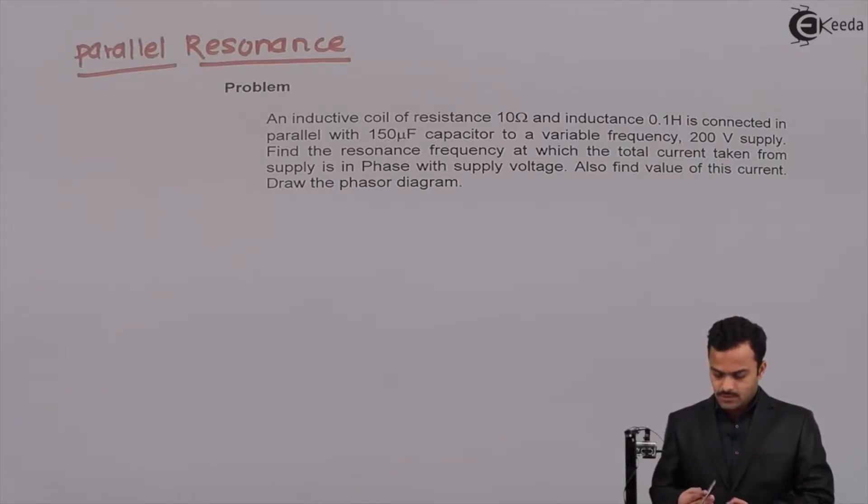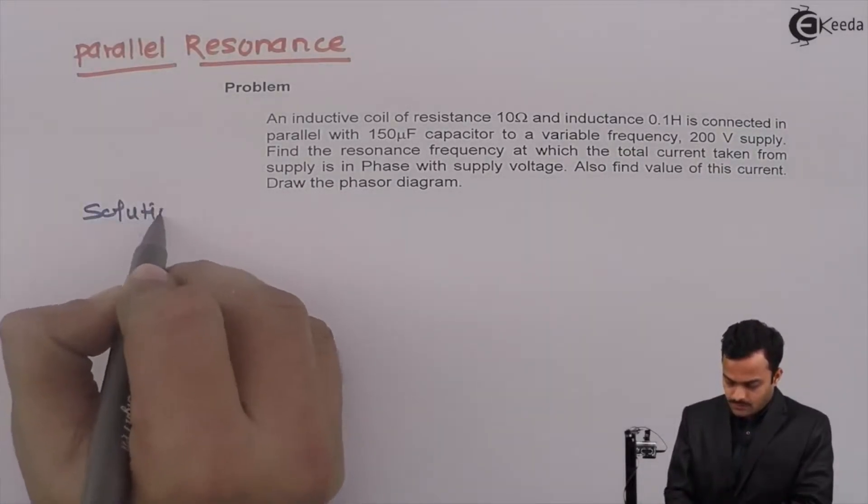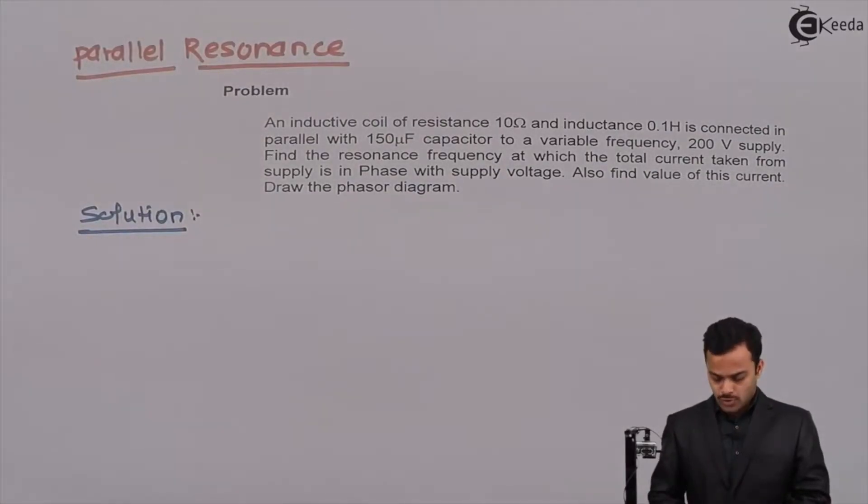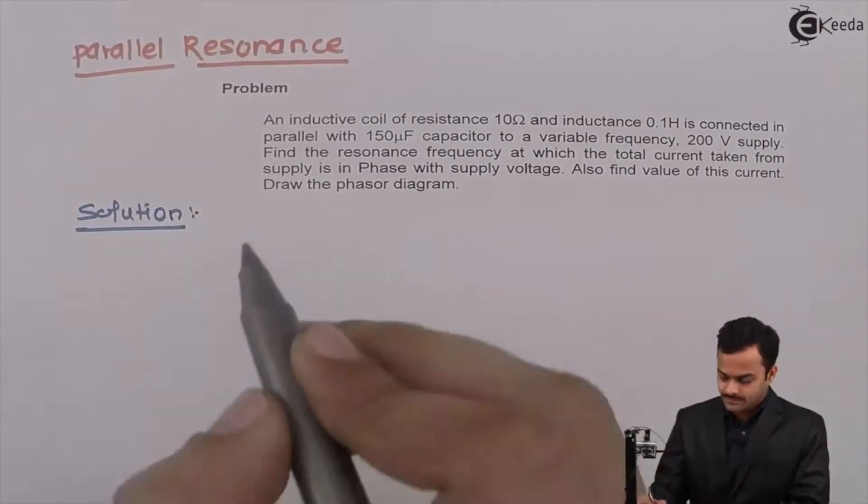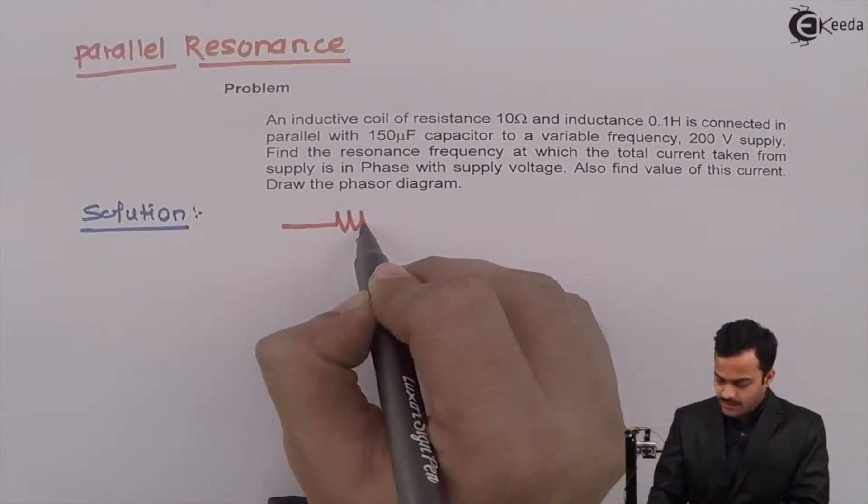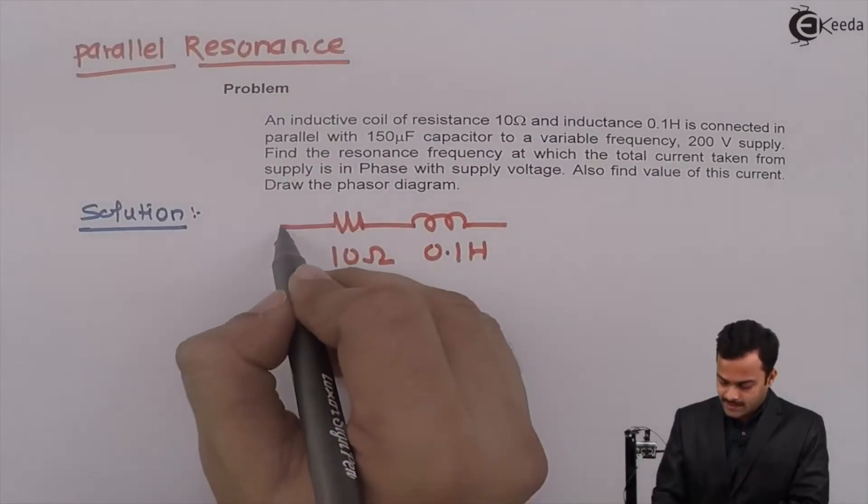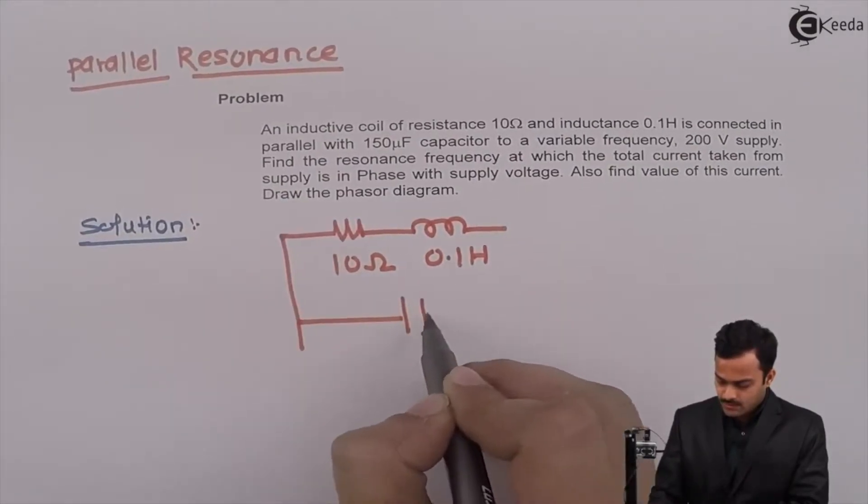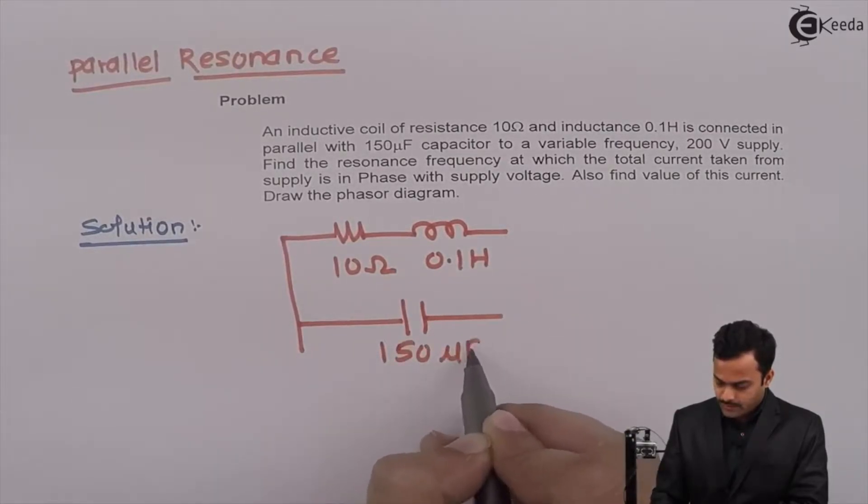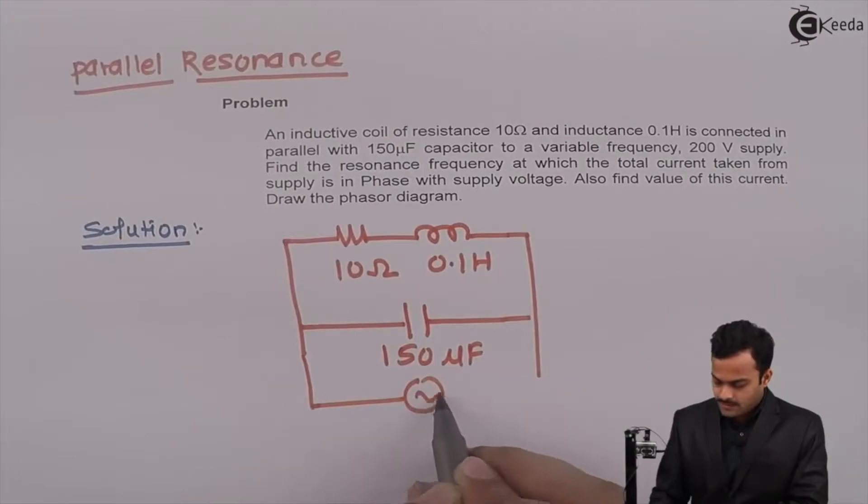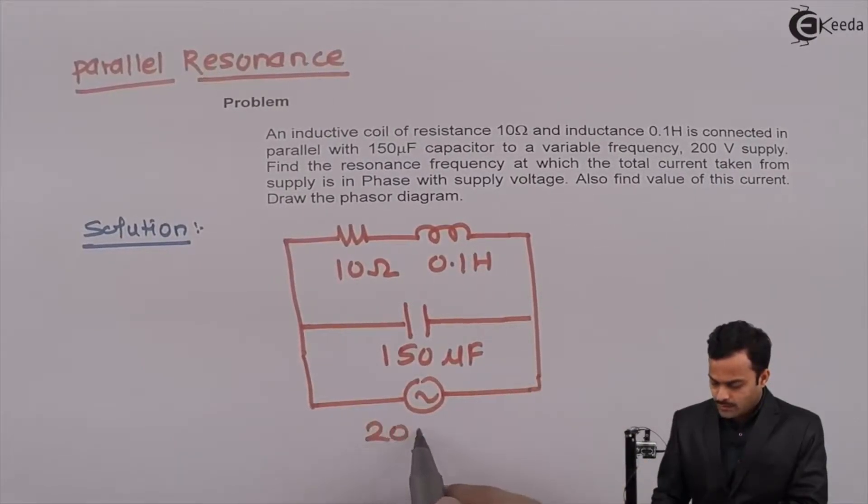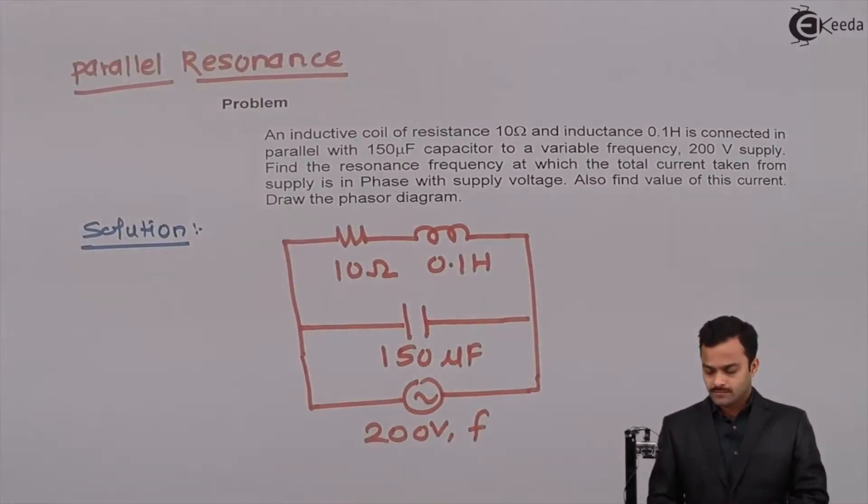So let's solve. First step, we have to draw a circuit diagram. So inductive coil is given of resistance 10 ohm and inductance 0.1 henry. This coil is connected in parallel with a capacitor whose value is 150 microfarad. And this circuit is excited by 200 volt and a variable frequency source. We have to find out resonance frequency and what is the current taken by this supply.